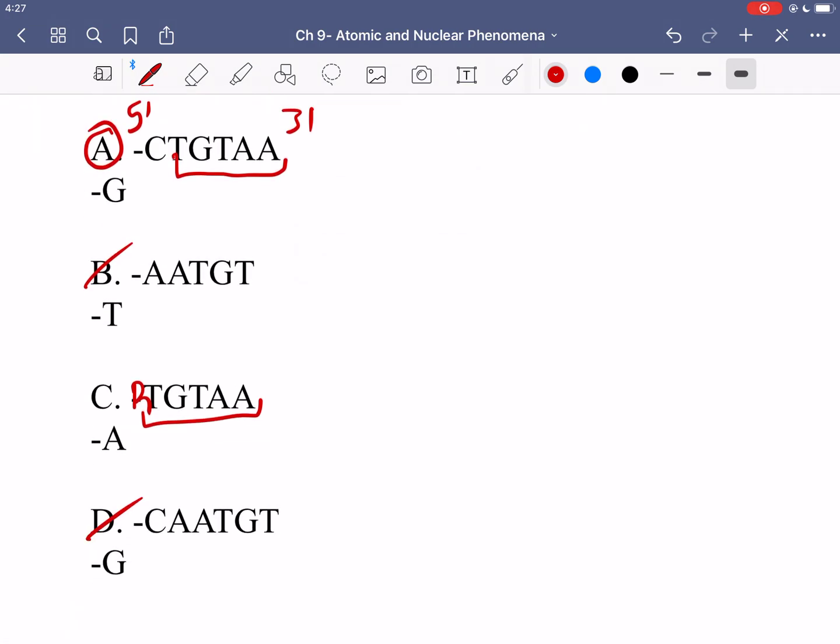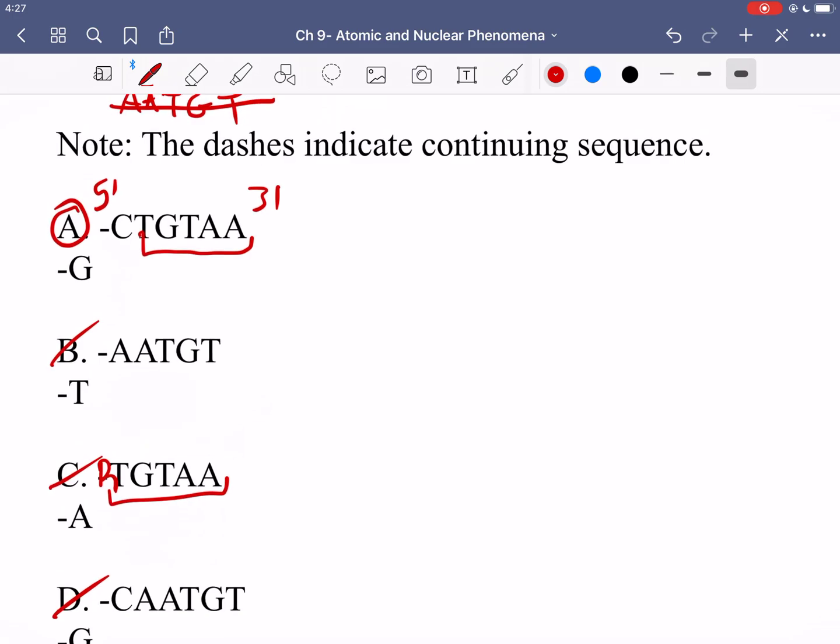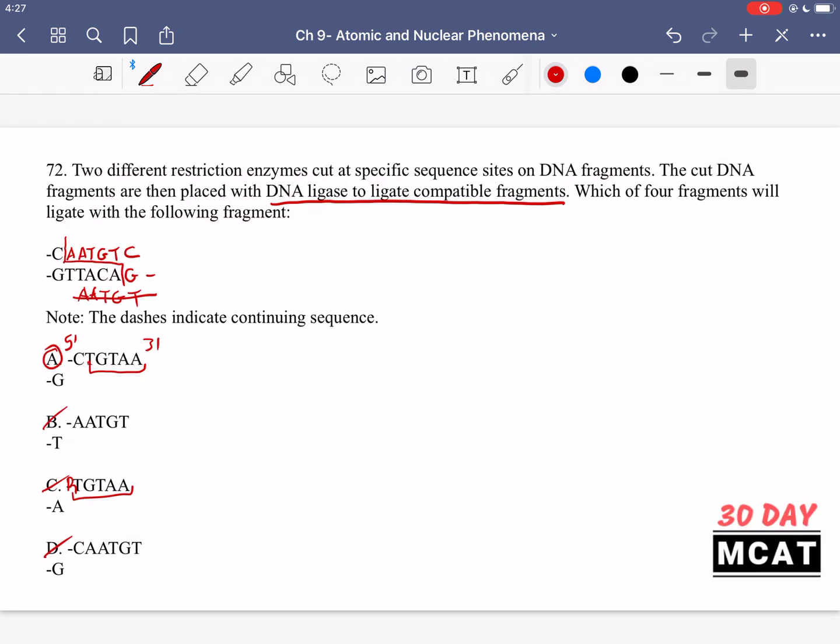And finally option D is also incorrect. So A is the only one which has a correct nucleotide, as well as having enough nucleotide so that you get a proper matching of the complementary strands rather than having a mismatch.